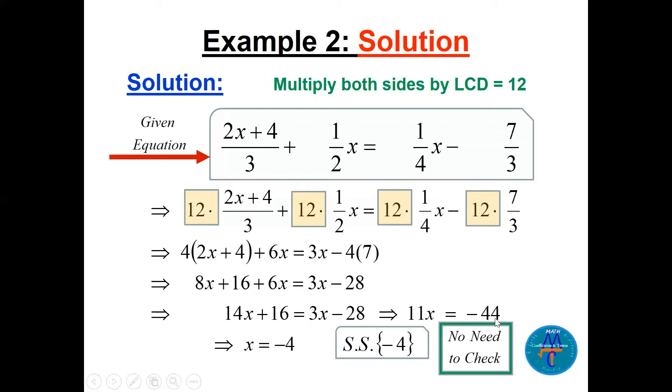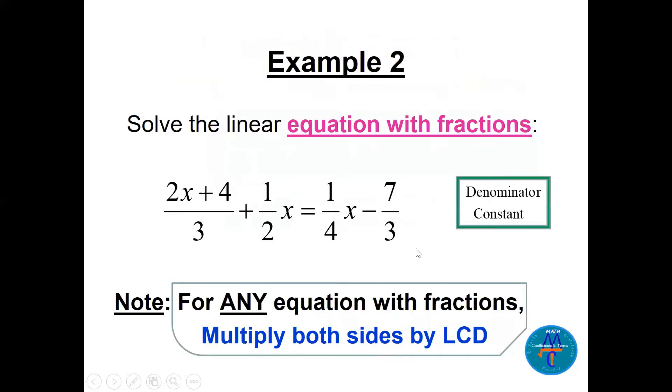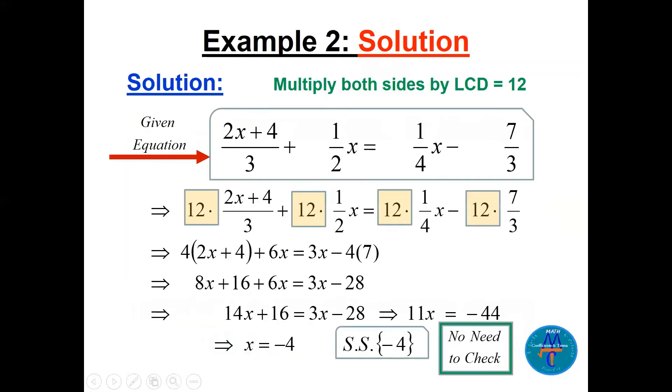Just divide by 11, x will be minus 4. No need to check. What does it mean here, no need to check? Let me explain. So this number here, if the solution is correct, this number is the solution. Because here, the denominators are constant. All of them should be constant. If the denominators are not constant, like the coming example, you have to check. Sometimes it's a correct solution, sometimes it is not.